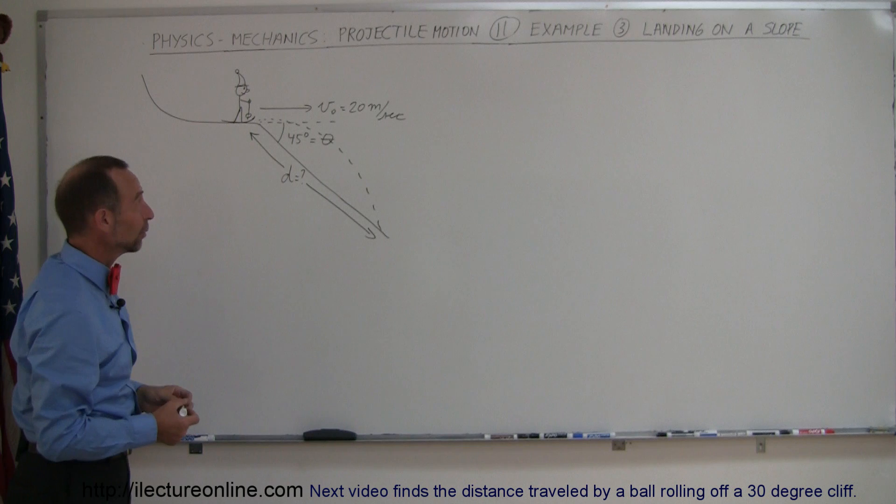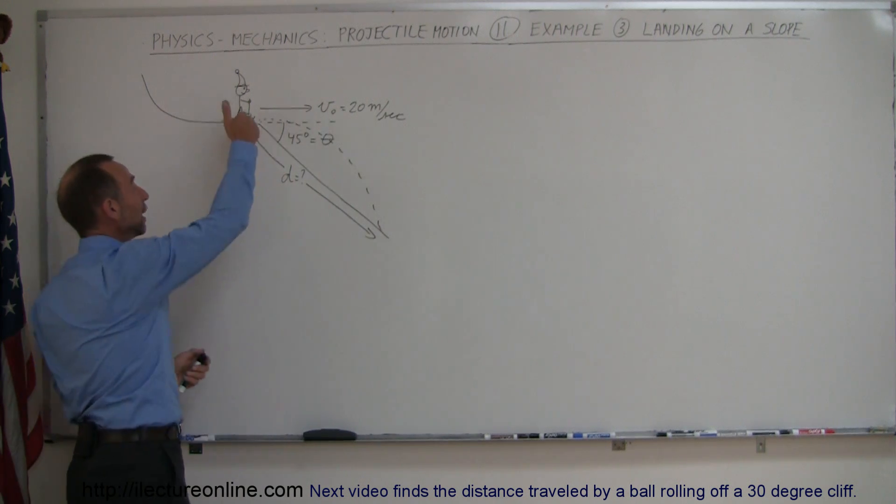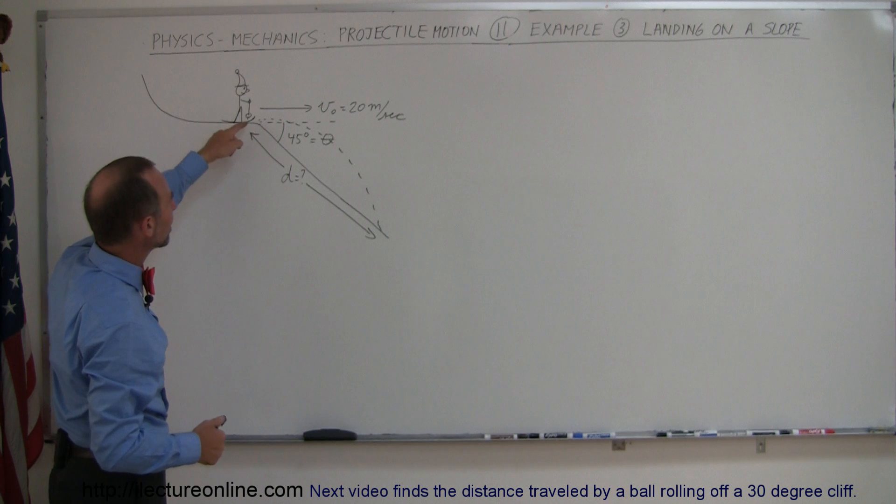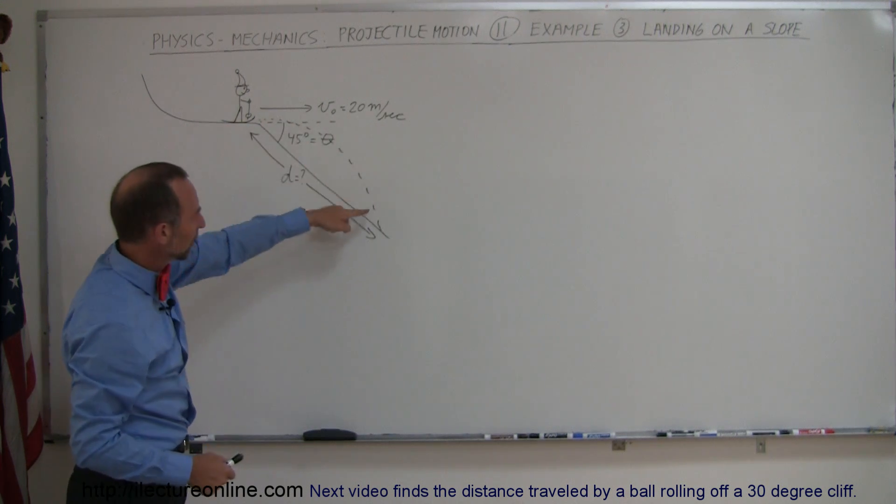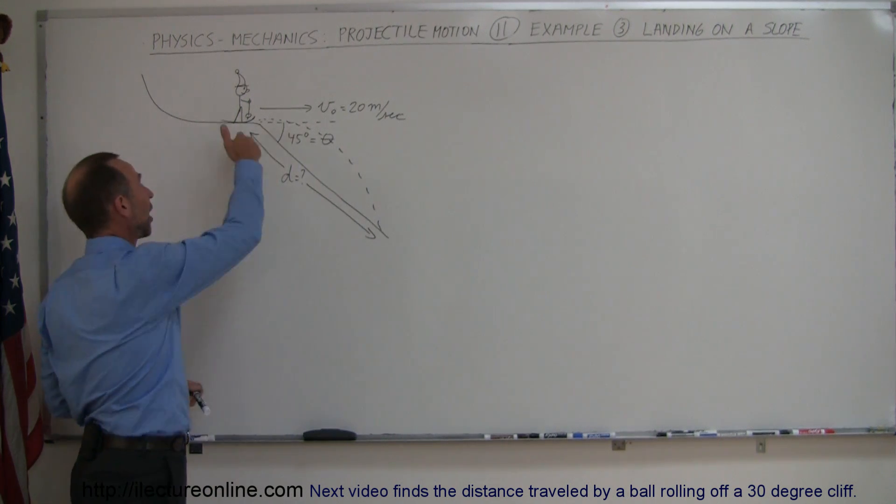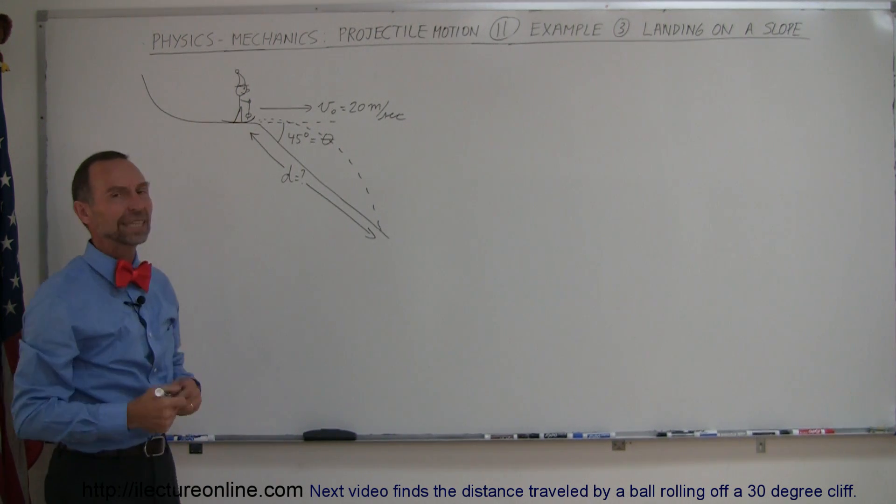reaching a speed of 20 meters per second, which is quite fast, and then getting to a cliff, well not quite a cliff, but kind of a slope of 45 degrees, and of course the motion will be like a projectile motion. The skier will land somewhere on that slope further down. The question is how far down the slope will the skier land?